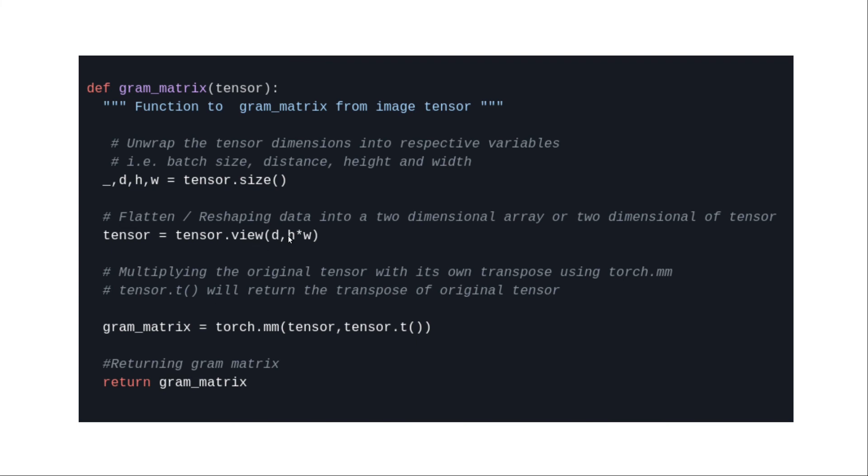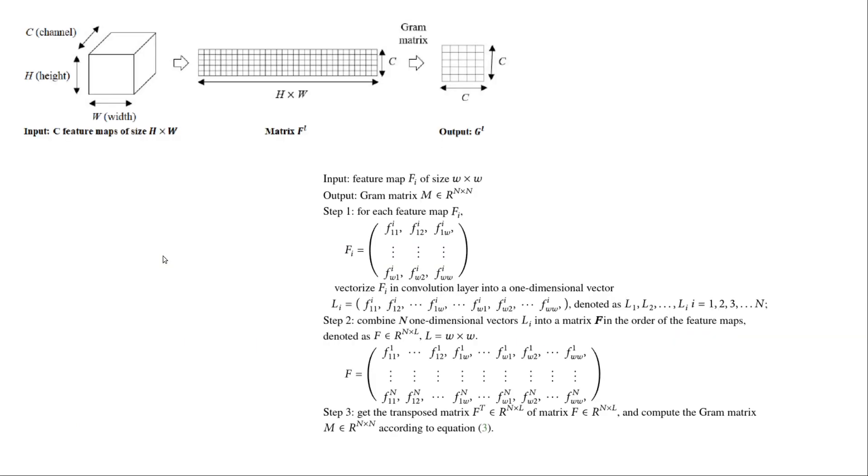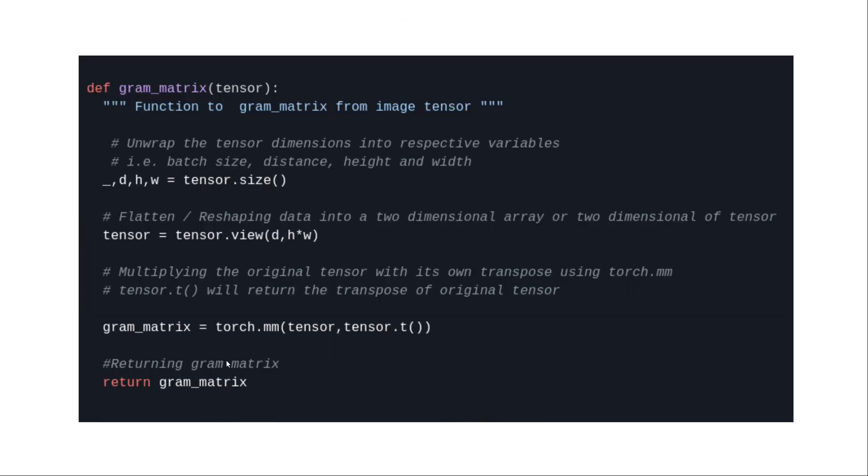Then just simple matrix multiplication of this tensor and the transpose of this tensor. That is what we got here in this algorithm: F is the tensor, is the matrix that we got after flattening all individual ones. And then I take the transpose F^T as well, and then calculate the matrix multiplication of those. That is, torch.mm, and then I'm passing tensor and tensor.t(), and that is very much my Gram matrix, and that's what this function returns.